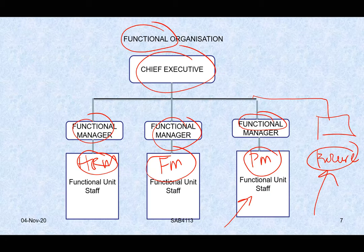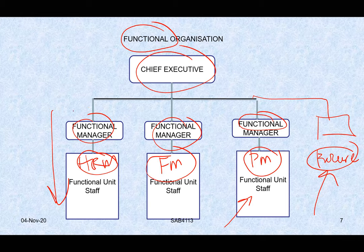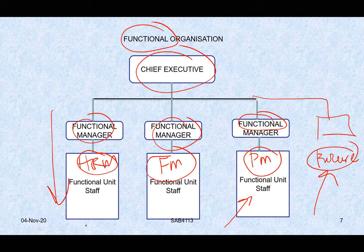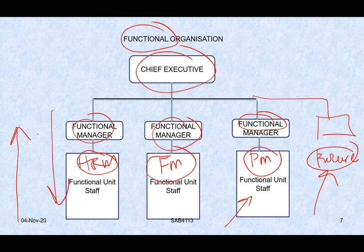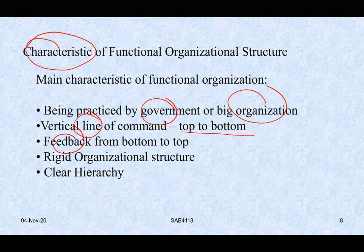Large organizations like Boeing and NASA use this kind of organizational structure. Why? Because it serves specific functions. There is a vertical line of command — top to bottom. The big boss gives instructions and the middle or lower boss passes them down to people in the unit. Feedback runs the other way, from bottom to top. The structure is also rigid — it doesn't change much because the function remains the same day after day.